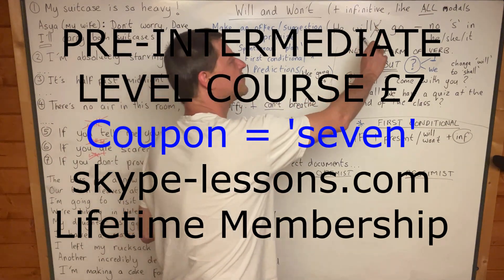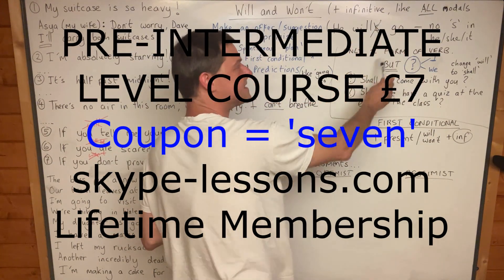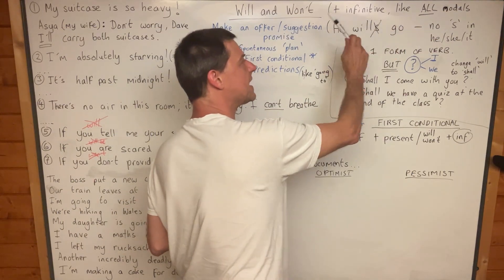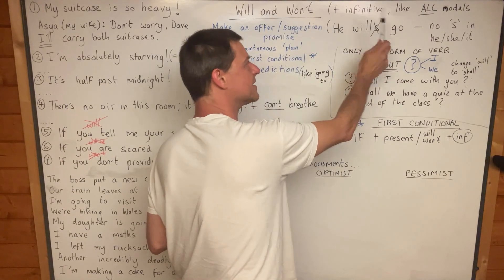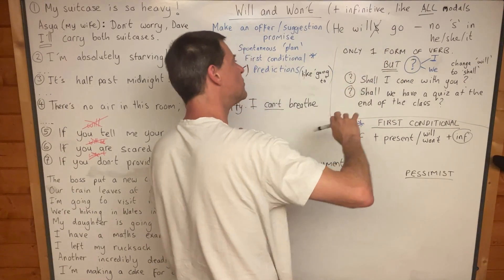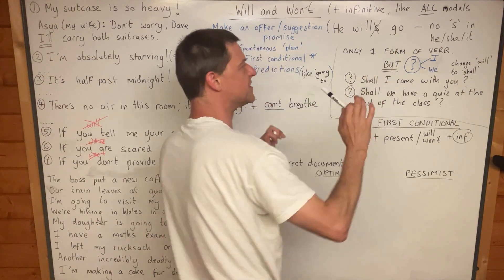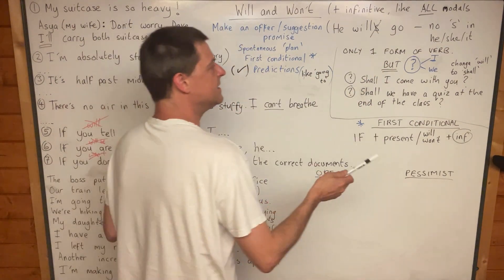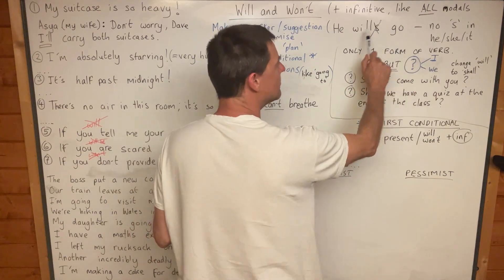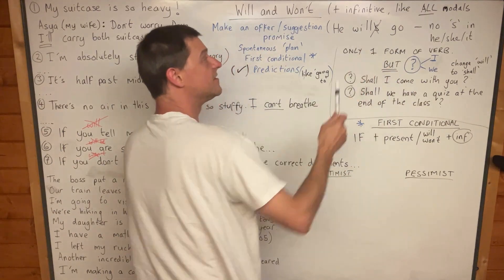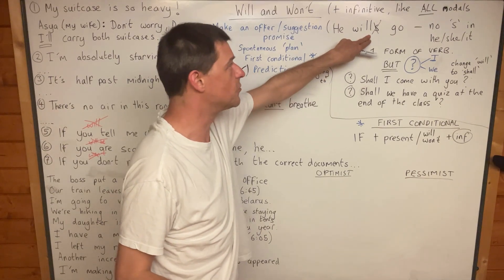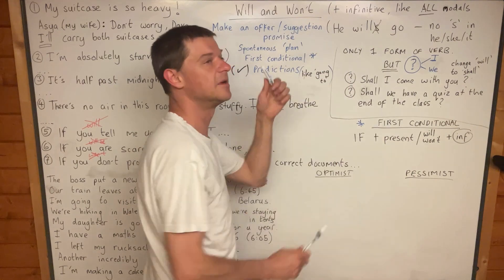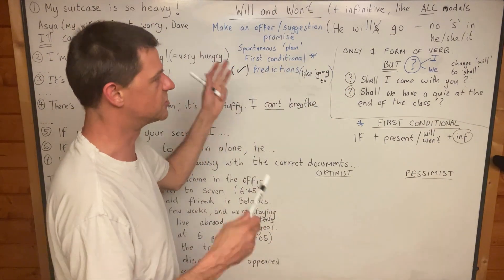Modal verbs always have an infinitive after them without 'to'. So it's always will go, will play, will study, will eat, will drink, will have, will be — always an infinitive after a modal verb. There's only one form of a modal verb. There is no 'wills', there's not even a 'willing' — no -ing form, no -s form. There's only one form: will, can, could, should, would.